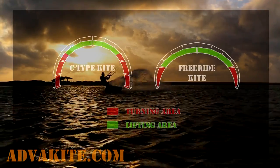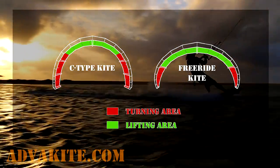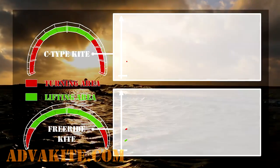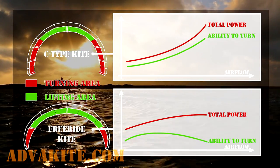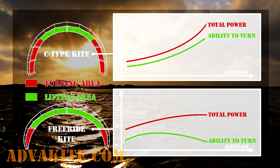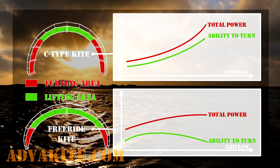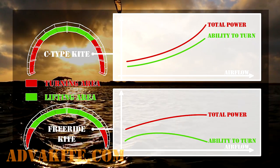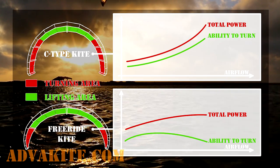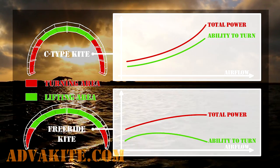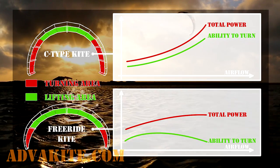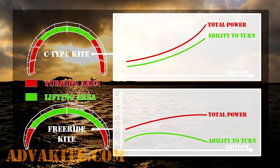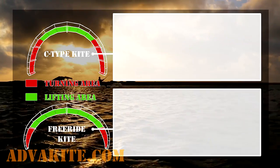C-type kites have a much bigger turning area, which allows them to turn faster. When the C-kite is put to the center of the wind window while it loops, the rising pressure of the airflow increases both traction power and the ability of the C-kite to turn. With freeride kites, the traction power is increased much more than the turning ability, corresponding to a lower percentage of turning area on the canopy. That's why freeride kites turn much slower when they are overpowered and are not suitable for high powered kite loops.